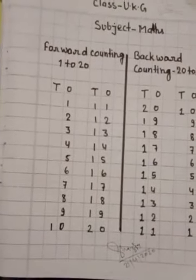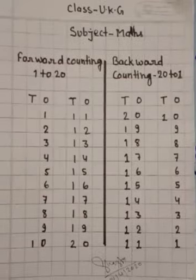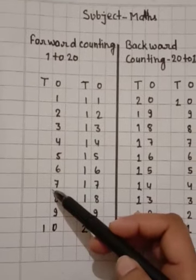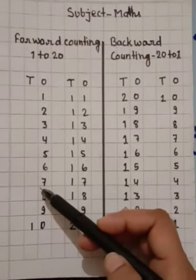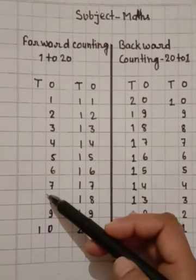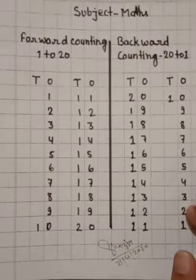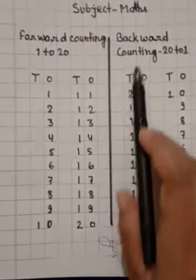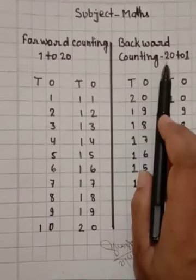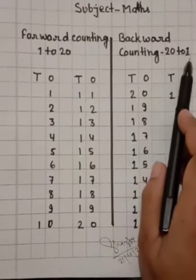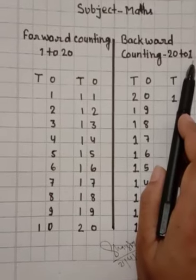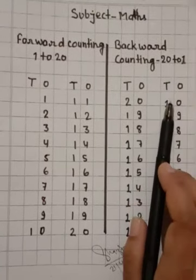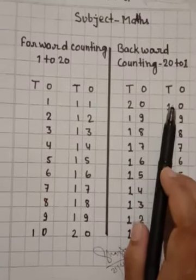It is the forward numbers. Now I will teach you backward counting from 20 to 1. First I will write here.